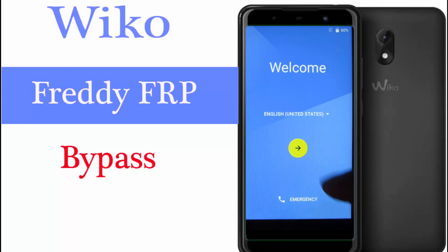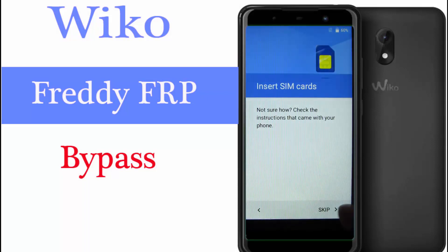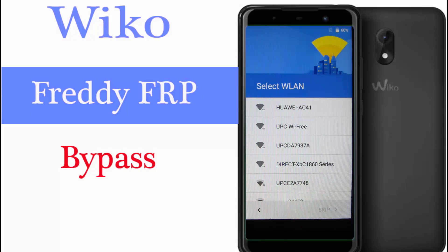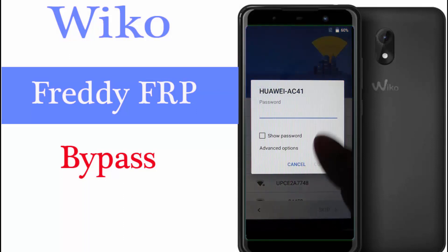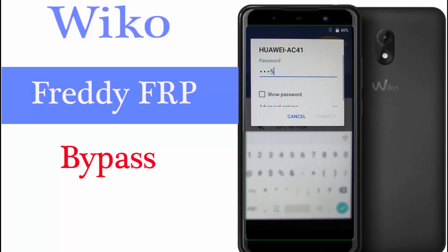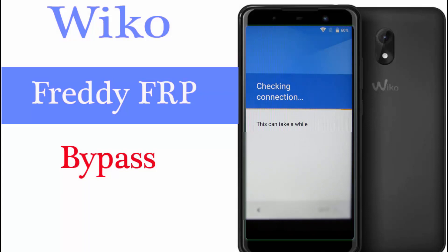First you have to choose your language, then press the arrow key. Here there is no SIM card, so press skip. Then choose your WiFi network, enter your password, and wait a little — it may take a few minutes, don't be panicked.